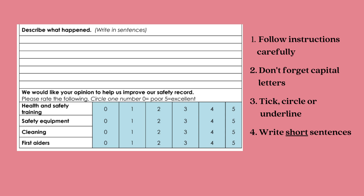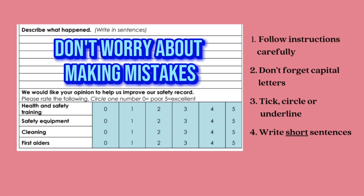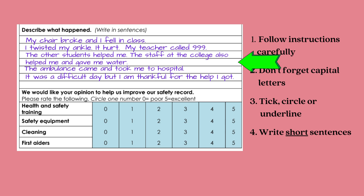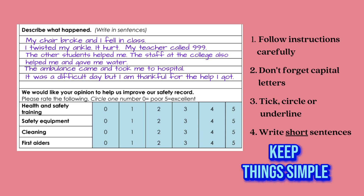They think that if they write a lot they'll make mistakes, so they write very little. That is wrong. You are allowed to make some mistakes — don't worry about making mistakes, focus on getting it right. In response to the question 'describe what happened' after an accident, I wrote: my chair broke and I fell in class, I twisted my ankle, it hurt, my teacher called 999, the other students helped me, the staff at the college also helped me and gave me water, the ambulance came and took me to hospital. Write short sentences, keep things simple, and don't worry about mistakes.